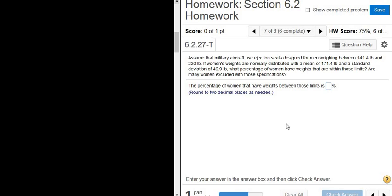Assume that military aircraft use ejection seats designed for men weighing between 141.4 and 220 pounds. If women's weights are normally distributed with a mean of 171.4, let's go ahead and write that down. So the mean for women is 171.4 and a standard deviation of 46.9. What percentage of women have weights within those limits? So we want to see the percentage of women that have weights between these limits that are created for men.